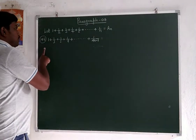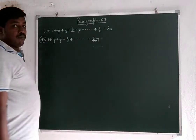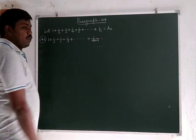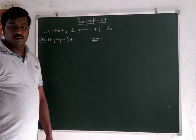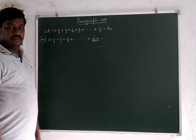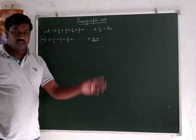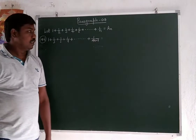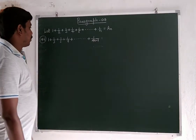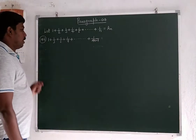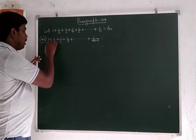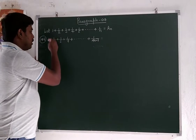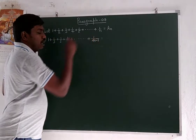Question number 148. So 1 plus 1 by 2 plus 1 by 3 plus 1 by 4 up to 2, plus 1 over m is equal to aₘ. This value is how much?